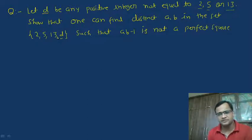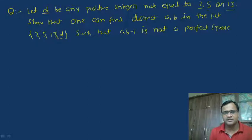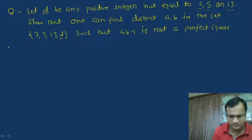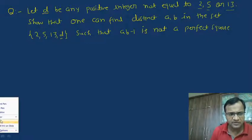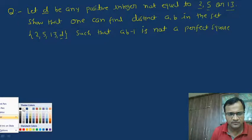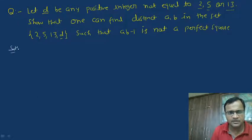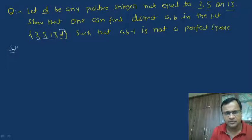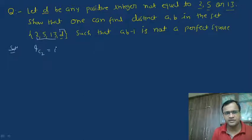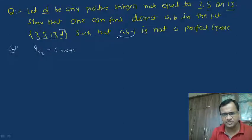We have to show that there exist two elements a, b in the given set such that ab minus 1 is not a perfect square. In the given set we have 4 elements, and we have to select 2 elements. There are 4 elements in the set — 3 elements are known, 1 element is unknown. So we can select 2 elements out of these 4 elements in 6 ways. There are 6 combinations of this type, and I am going to check some initial combinations.